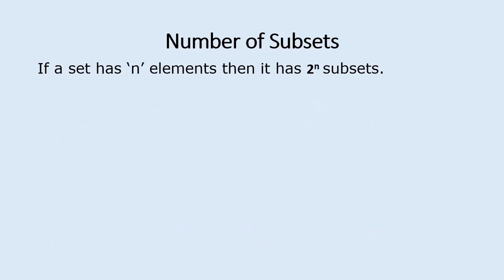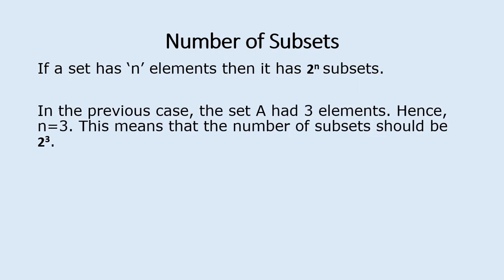How do we determine the number of subsets? If a set has n elements then it has 2^n subsets. In the previous case, set A had three elements, so n equals 3, meaning the number of subsets is 2^3. Remember, 2^3 means two multiplied by itself three times: 2 × 2 × 2 = 8, which matches what we counted.